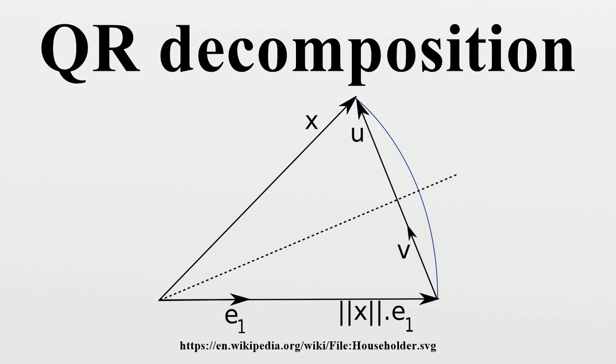As the bottom rows of an M times N upper triangular matrix consist entirely of zeros, it is often useful to partition R, or both R and Q.